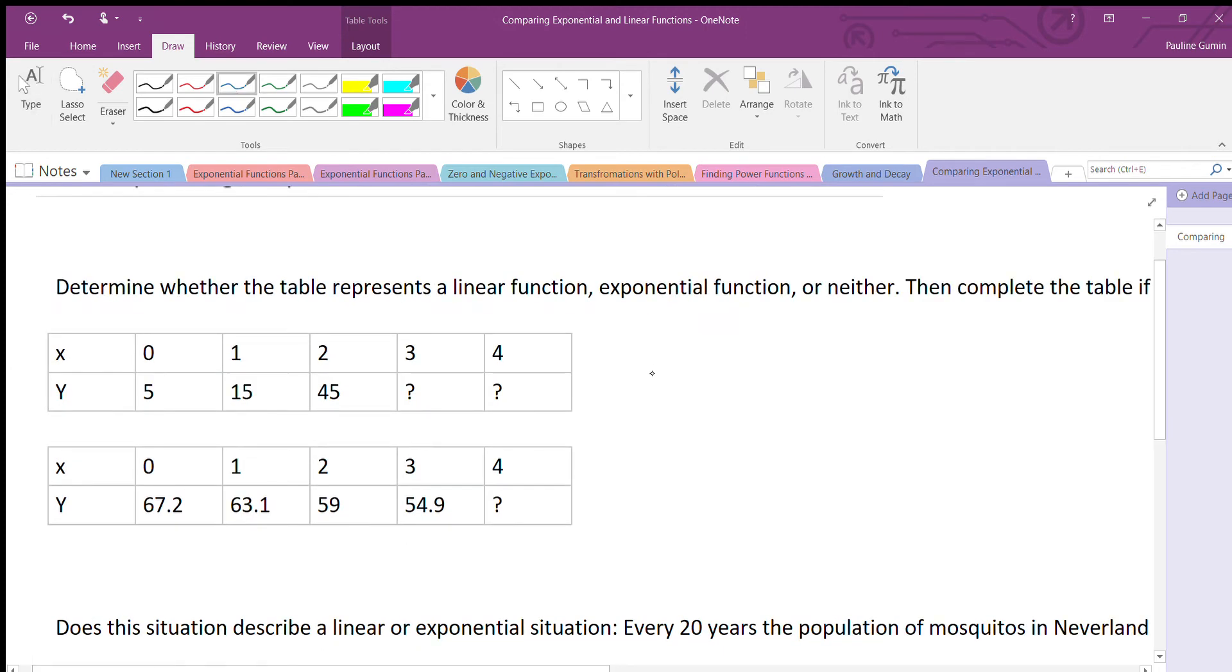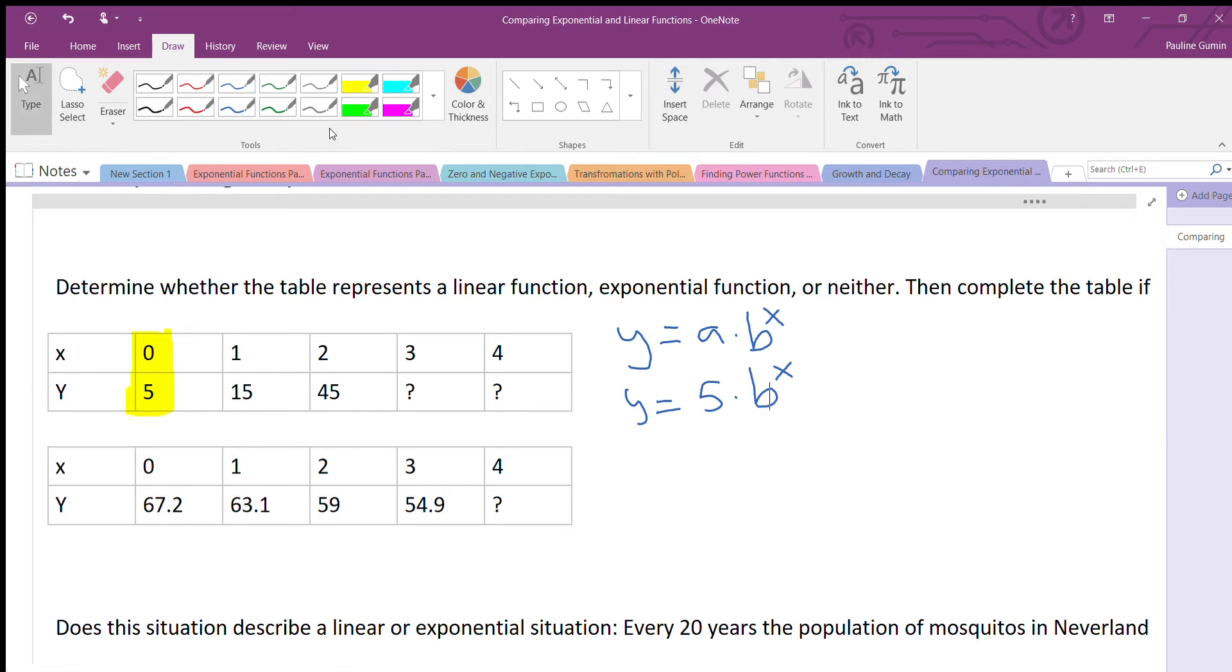Recall that our exponential function is y equals a times b to the x. A is our initial value. Now this table actually gives us our initial value. Remember the y-intercept? The y-intercept is our starting point. Starting point is the same thing as our initial value. Check it out. There it is. We have a already. Perfect. Y equals 5 times b to the x. That's kind of helpful. Now I'm going to plug in another x and y into the equation and see whether or not that helps me solve it. I'm going to choose the next smallest one. So 1 and 15. So I'm going to plug in 1 and 15 over here. Let's give it a shot.